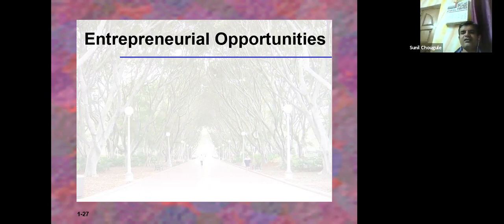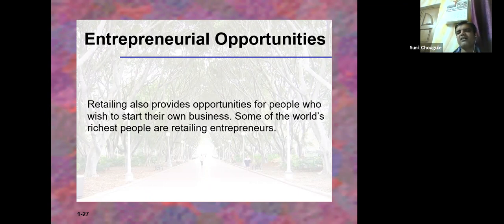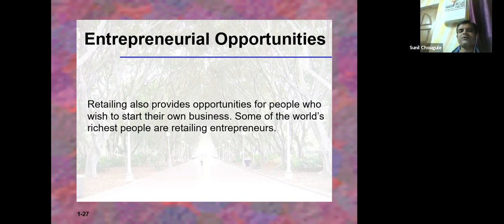Retailing also provides opportunities for people who wish to start their own business. Some of the world's richest people are retailing entrepreneurs. Jeff Bezos of Amazon.com is one example. After his research uncovered that internet usage was growing at the rate of 2,300% annually - nearly doubling every month - Bezos, a 30-year-old son of a Cuban refugee, quit his job on Wall Street and left behind a hefty bonus to start an internet business named after the Amazon river, symbolizing his objective of achieving the greatest volume of internet sales.